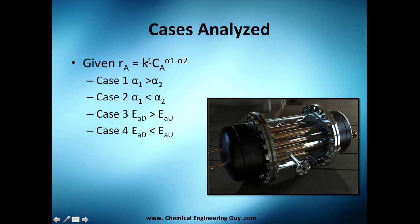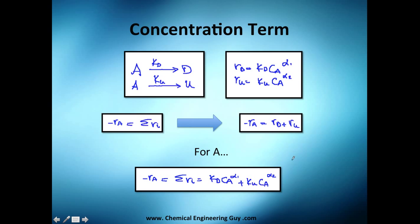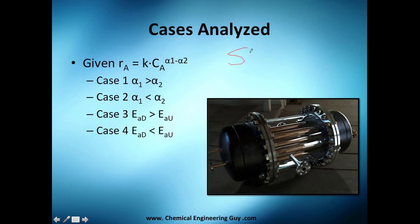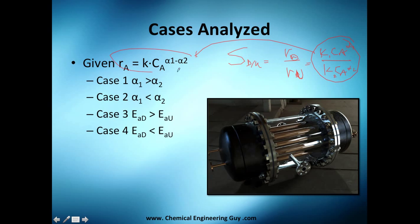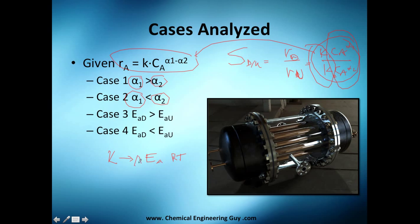These are the cases we're going to analyze. Selectivity, by definition — instantaneous selectivity — is the desired rate divided by the undesired rate, giving kd·CA^alpha1 divided by ku·CA^alpha2. This is our master equation to analyze the different cases: when alpha1 is greater than alpha2, and when alpha1 is less than alpha2. The rate constant k depends on activation energy, R, and T.